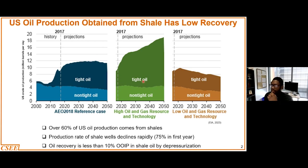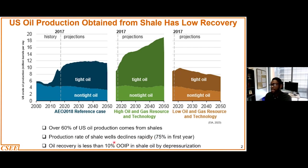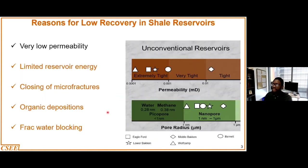As we are all aware, the United States production of crude oil mainly comes from shale — over 50% of the production comes from shale. These formations have some challenges. First of all, the production rate declines by about 75% in the first year, and we have usually low production from this type of reservoir — we're talking about values of 10% or less via depressurization. The reasons for the low recovery in shale have to do with undesirable petrophysical properties such as ultra-low levels of permeability and limited reservoir energy.